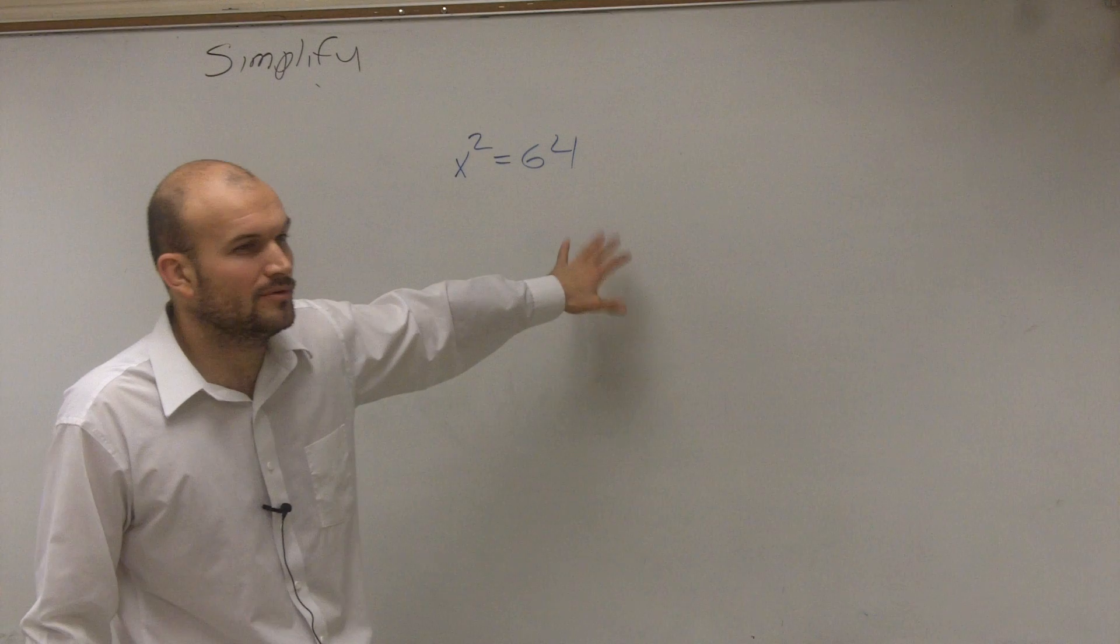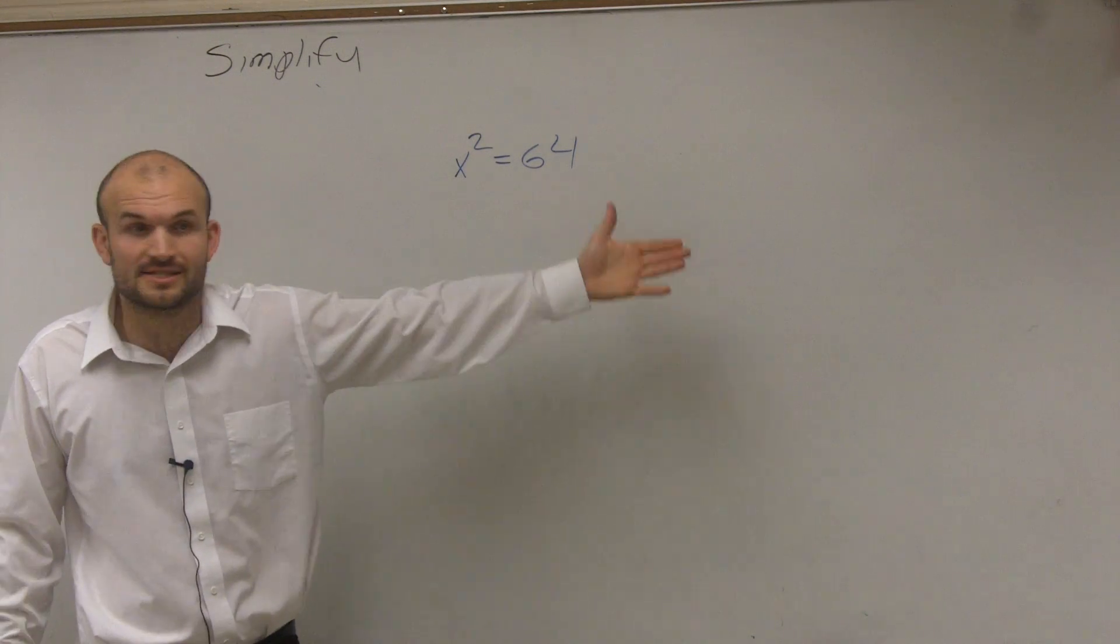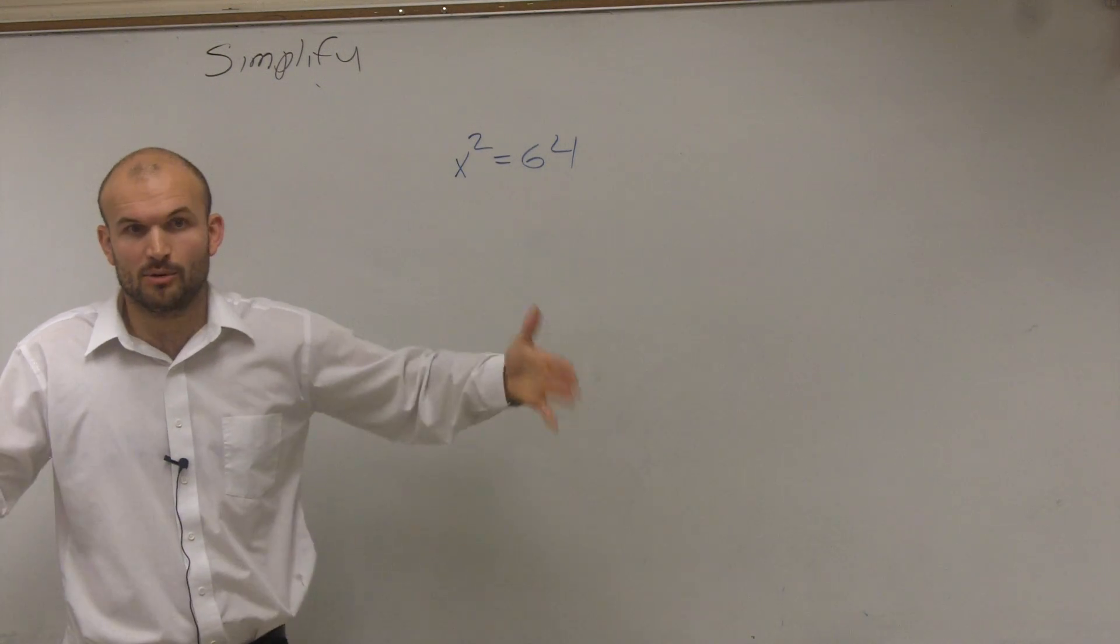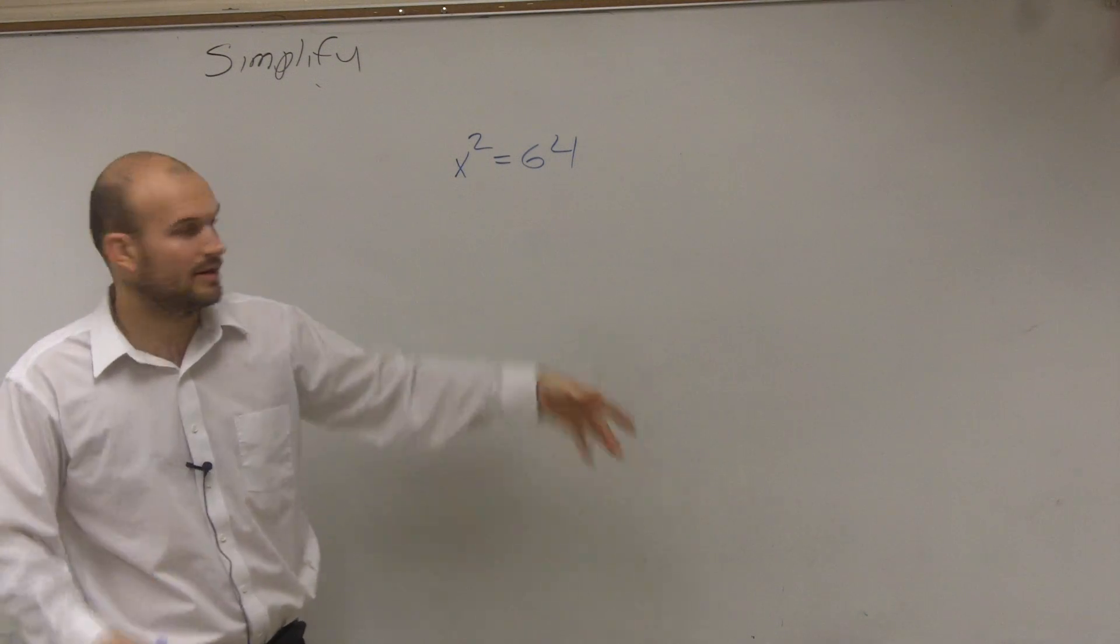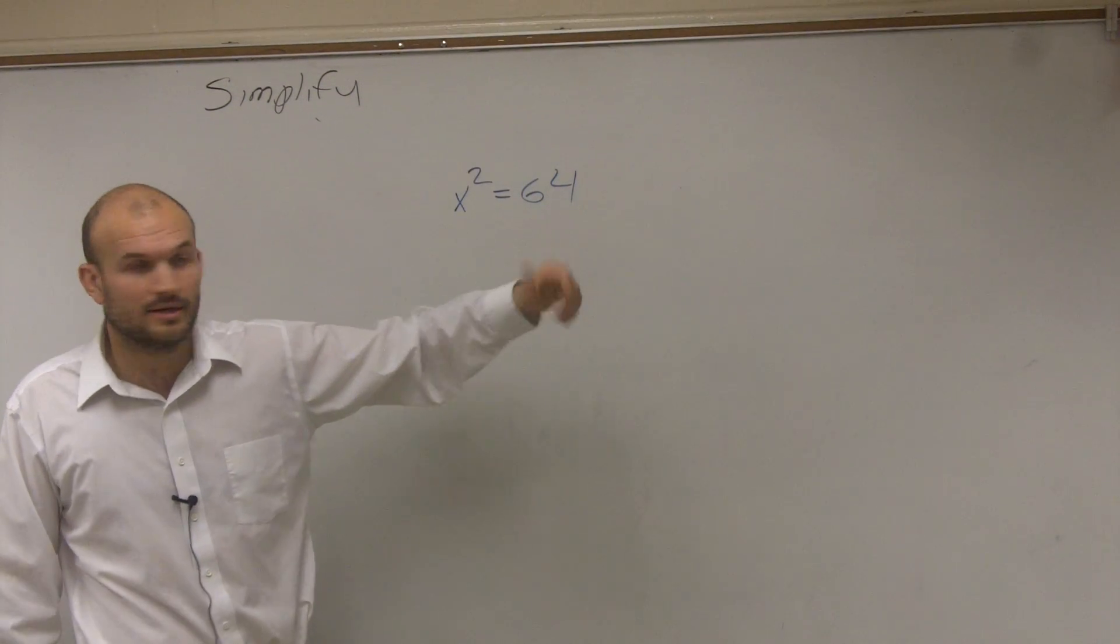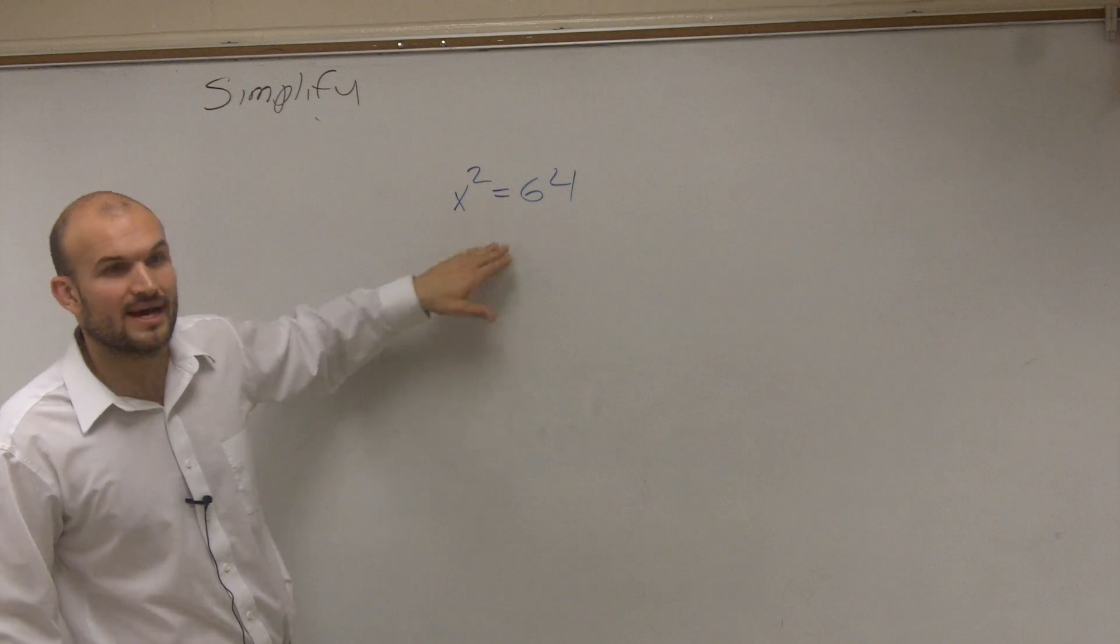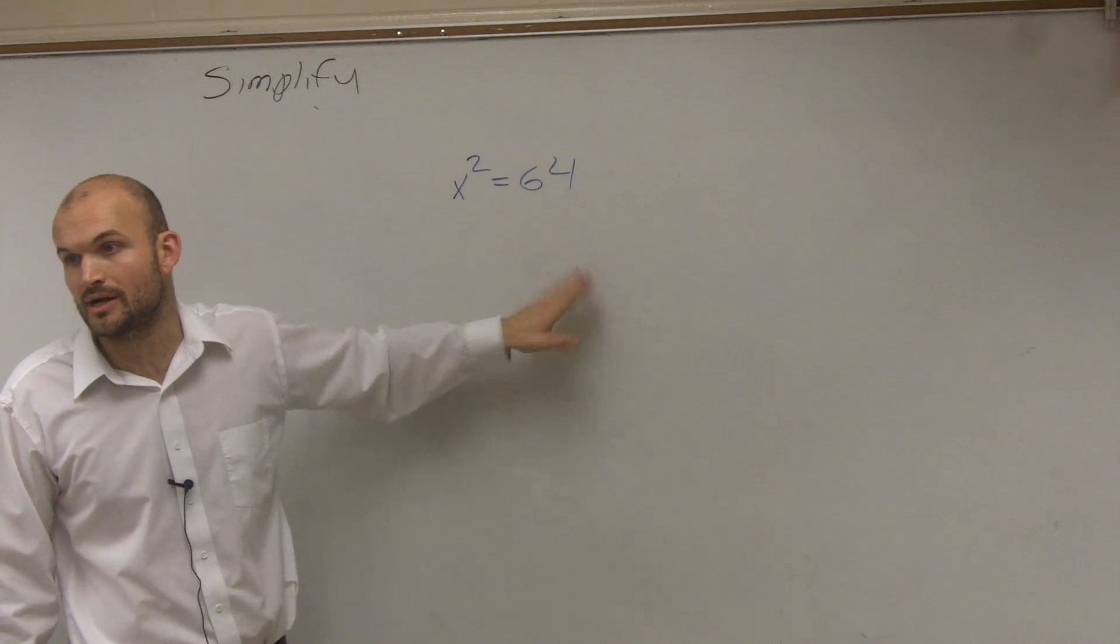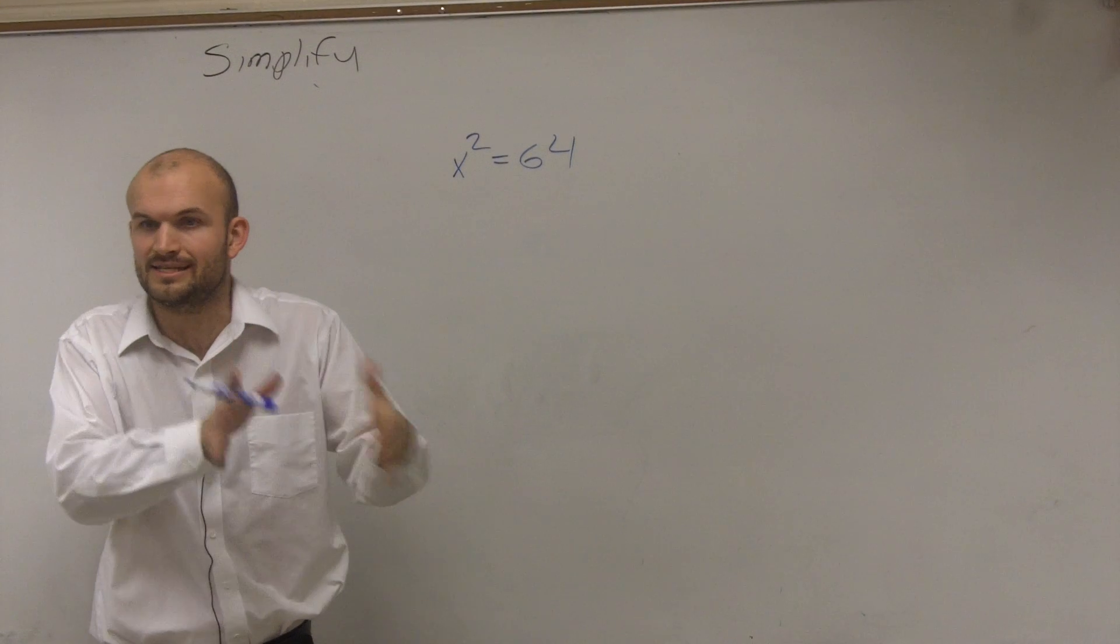But let me show you what would be the easier way to do this. When solving, we have to isolate our variable, get our variable by itself, and then evaluate for it. So I have x² = 64. My variable's isolated. That's good. Now I just need to find the value of x. Right now I have the value of x squared. So I need to undo the squaring, because I just want to see what does x equal.